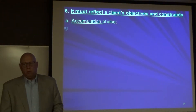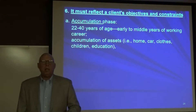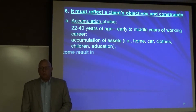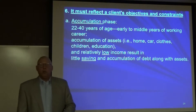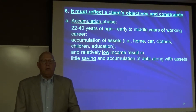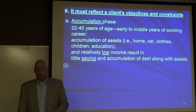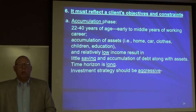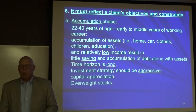We have the accumulation phase, which happens between ages 22 and 40 — your early to middle working years. You're accumulating assets: buying your house, cars, clothes, having children, starting to save for education. Relatively low income during these years, so your savings aren't as great. You have accumulation of debt along with assets. Your investment time horizon is very long, so your investment strategy should be pretty aggressive. You're looking at capital appreciation, and you're going to overweight stocks.